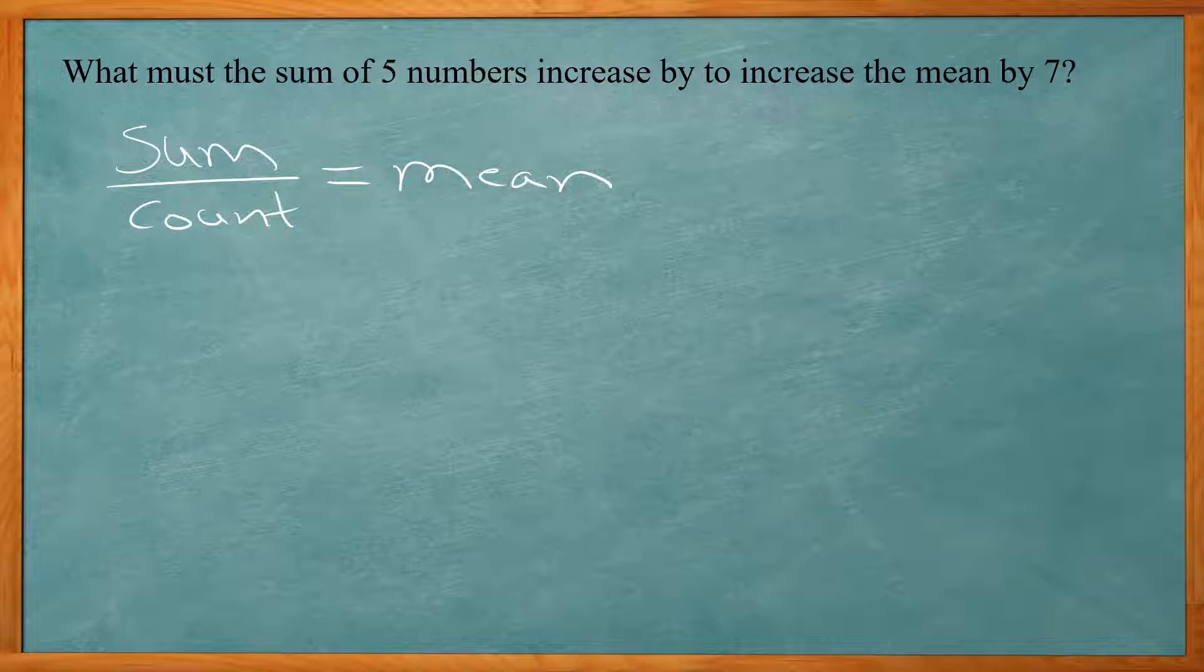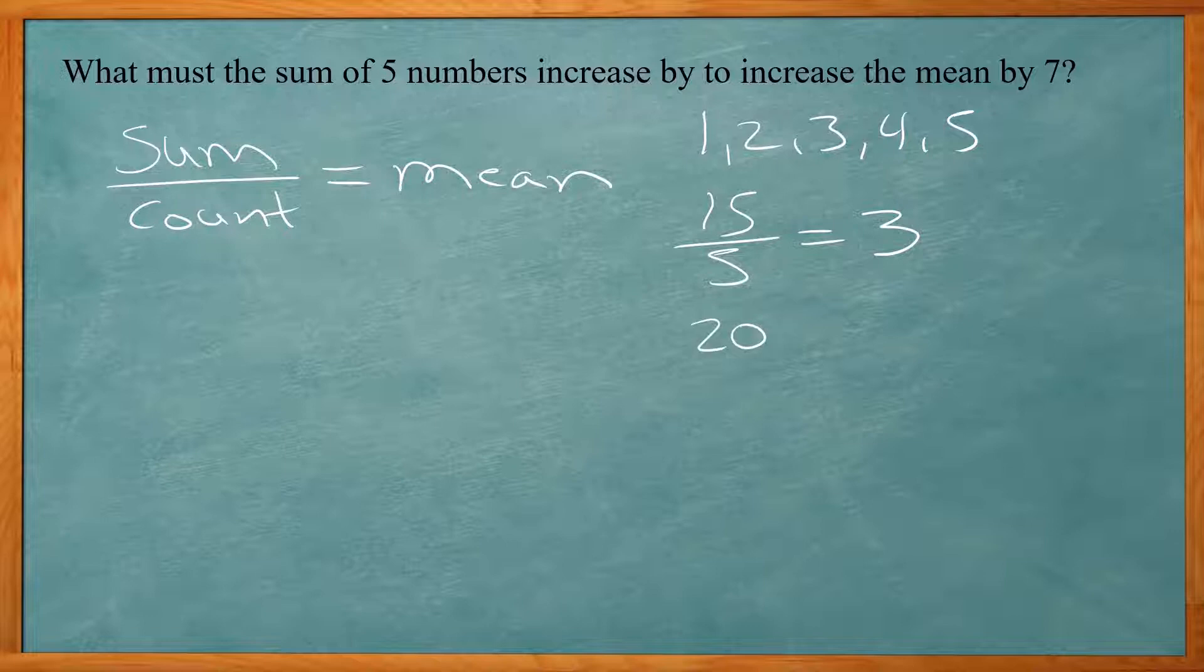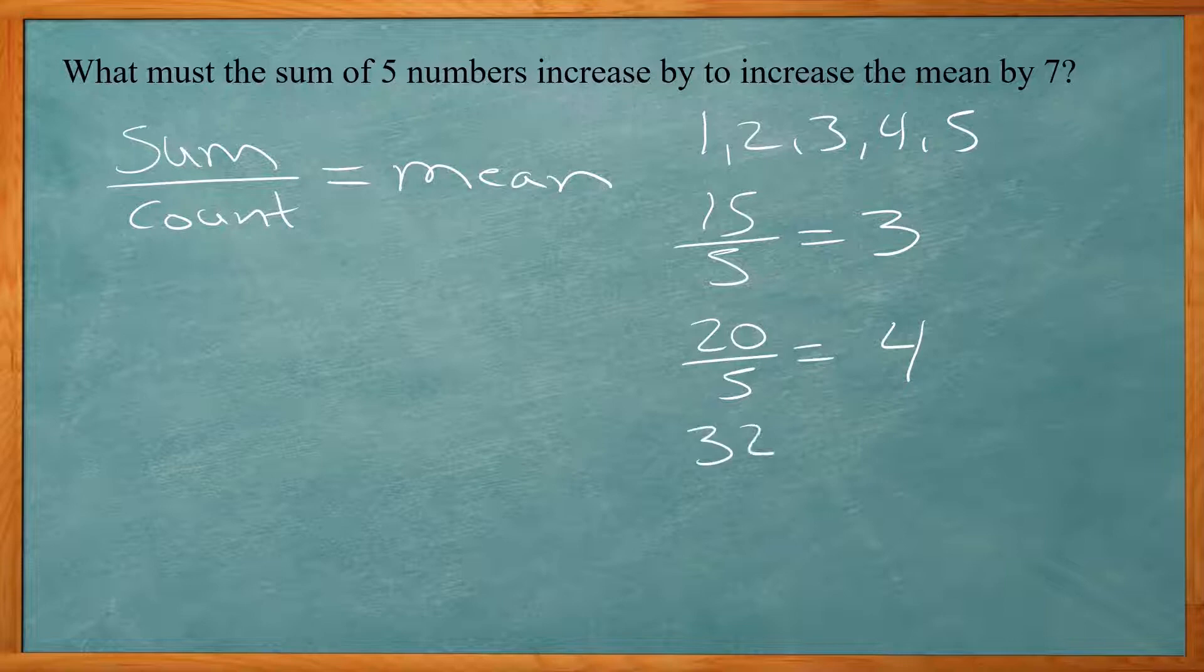So let's take 5 numbers: 1, 2, 3, 4, and 5. So the sum of those numbers is 15. There's 5 of those numbers. So 15 divided by 5, our sum over count will give us 3. We want to increase this by 7. So we want this mean to get up to 10. Well, so let's increase the sum by 5, let's say. So now we got 20 over 5. So now we got a mean of 4. So let's try a little bit more.